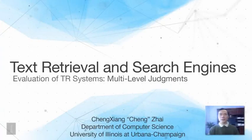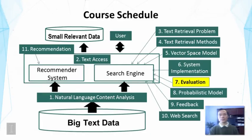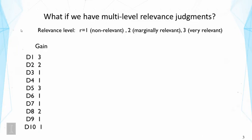This lecture is about how to evaluate text retrieval systems when we have multiple levels of judgments. We will continue the discussion of evaluation, looking at how to evaluate text retrieval systems when we have multi-level judgments. So far we have talked about binary judgments, meaning a document is judged as being relevant or non-relevant.